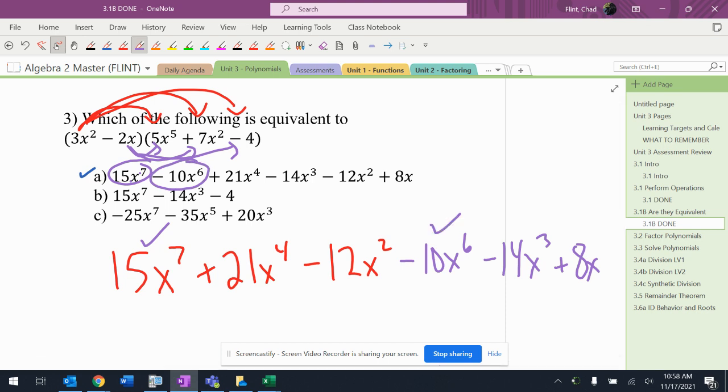Negative 10x to the sixth right there. 21x to the fourth right there. Negative 14x to the third right there. Negative 12x squared right there. 8x right there. Definitely A. All right.